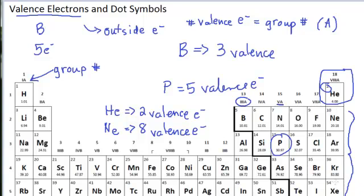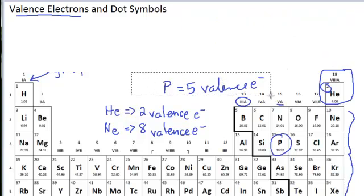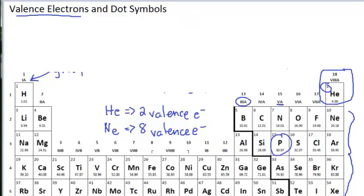Now I can draw, I can symbolize these valence electrons. Let me get some space here. I can symbolize these valence electrons in something called a dot symbol. The dot symbol puts dots around the letter that stands for the element, up to the total number of valence electrons.